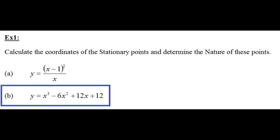Same exercise, but for a different equation. The equation in part B reads y is equal to x cubed minus 6x squared plus 12x plus 12. Let's see how this is done — let's work out the coordinates of the stationary points and determine the nature of these points. Back to the paper and pen.